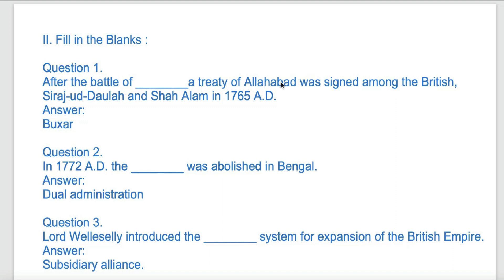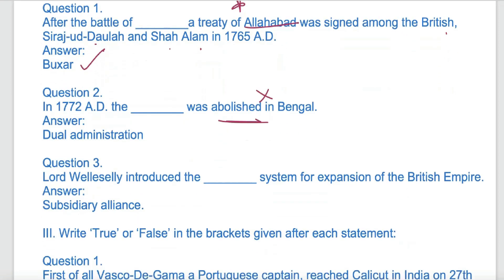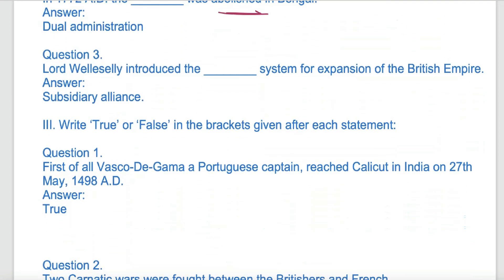After the Battle of Buxar, the Treaty of Allahabad was signed between the British, Sirajud-Dawla, and Shah Alam. In 1772 AD, the Dual Administration in Bengal was abolished and finished, bringing Bengal under the direct control of the company. Lord Wellesley introduced the subsidiary alliance.